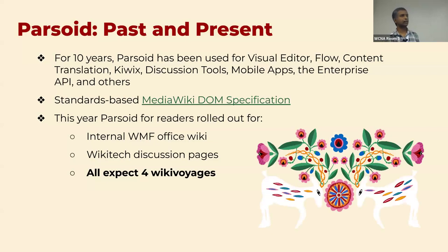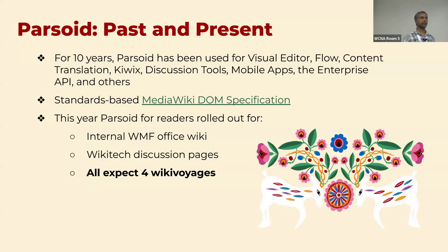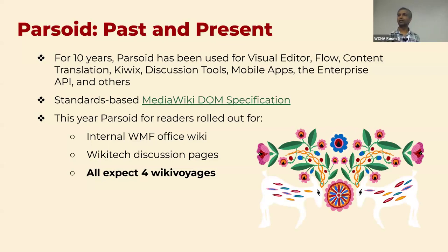For the last 10 years, starting with Visual Editor, it's moved to support many other tools. Content translation on the backend uses Parsoid, QVIX, offline data uses Parsoid, discussion tools uses Parsoid, the mobile apps, enterprise API. So at this time, pretty much everything but the desktop reviews — when you go to the wiki and look at a page — the HTML that you see is not Parsoid right now.